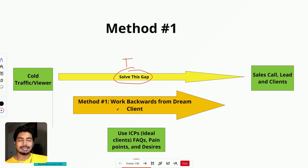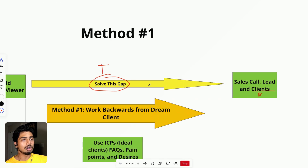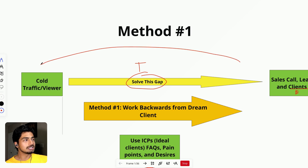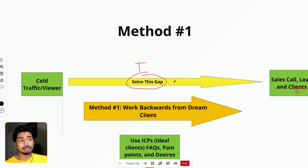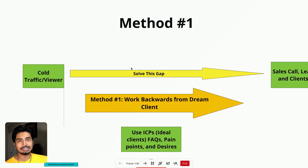If people do not trust you, they will not buy from you. So how do you turn someone that's cold — a cold viewer, a first-time seer of your content — into someone that's on a sales call or trusts you enough to become one of your clients and give you money? That is all bridged by trust, and you bridge this gap with content. It's one of the only ways you can bridge this gap — by creating content that allows people to trust you and then hopefully buy from you and become a lead or a sales call in the future. That is why we create content and why content actually works.